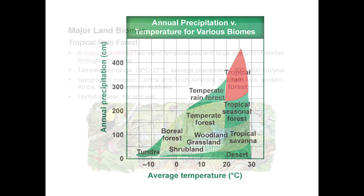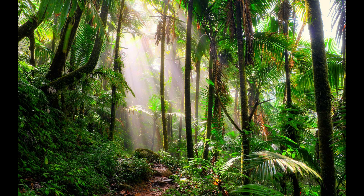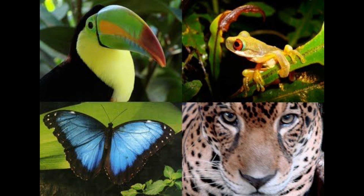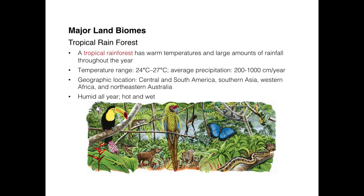Finally, tropical rainforests receive 200 to 1,000 centimeters of rain per year, producing thick foliage and enormous animal variety. They feature large rainfall throughout the year and very warm temperatures, found close to or at the equator line where the most sun is received. Tropical rainforests are located in Central America, South America (the Amazon), Asia, western Africa (the Congo), and northeastern Australia. It's humid, hot, and wet all year. That covers the different terrestrial biomes — thanks for watching and good luck studying.